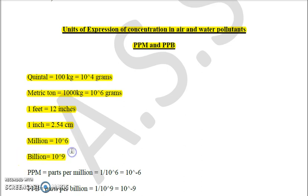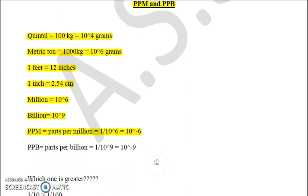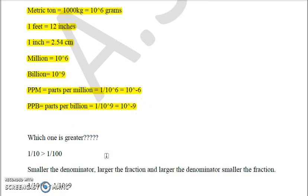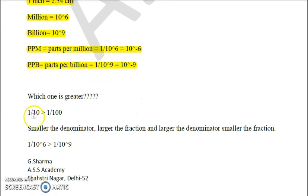ppm stands for parts per million, so it is 1/10^6 or 10^-6 parts per million. ppb stands for parts per billion, which is 1/10^9 or 10^-9 parts. To understand which is greater: consider 1/10 versus 1/100 — the smaller the denominator, the larger the fraction. So 1/10^6 is larger in magnitude than 1/10^9.